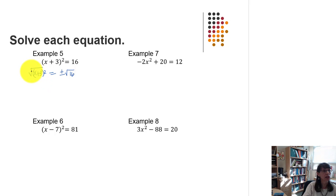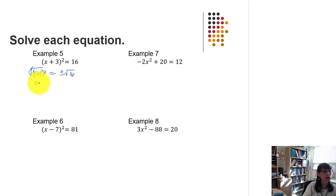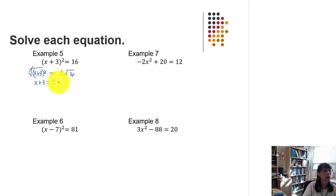When you take the square root of a perfect square, those are opposite operations, so any radicand will be released from the radical. That leaves x plus 3 equal to plus or minus the square root of 16. Since the square root of 16 is 4, we have our quantity equal to plus or minus 4.